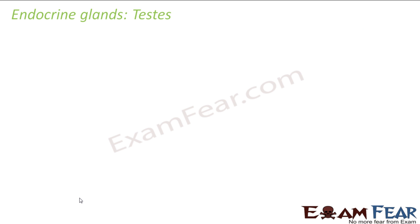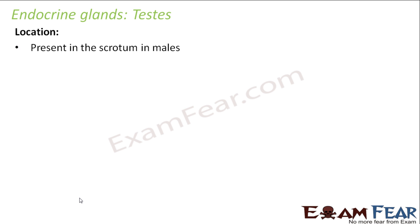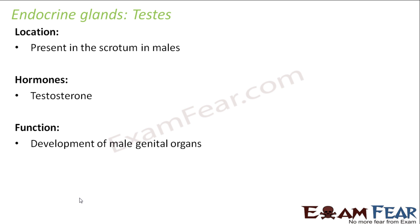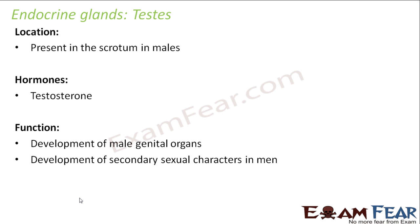Similarly, there are hormones in males as well. The testes are the organs present in the scrotum in males, and the hormone they secrete is testosterone — a very similar name to the gland itself. Their function is similar to the female counterpart: testosterone helps in the development of male genital organs, that is the male reproductive organs, and also helps in the development of secondary sexual characters in men.